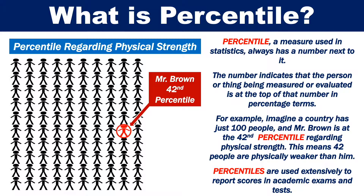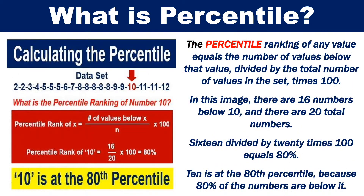Percentiles are used extensively to report scores in academic exams and tests. The percentile ranking of any value equals the number of values below that value, divided by the total number of values in the set, times 100.